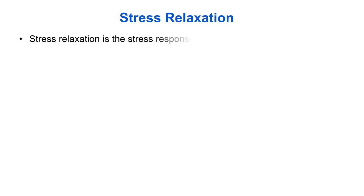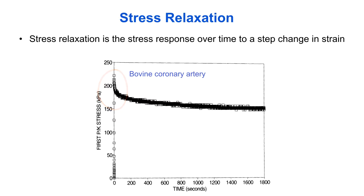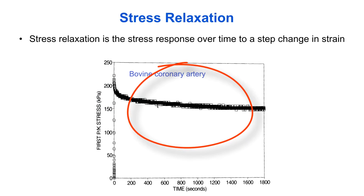Stress relaxation is a similar experiment where the strain is constant and the stress is measured over time. In this example of a bovine coronary artery, the stress increased instantaneously when the strain was increased to over 200 kilopascals, but then immediately the stress starts to decay even though the strain was not changing. After this initial fast decay in the first 10 to 20 seconds, the stress continues to decay more slowly for the next 20 to 30 minutes.